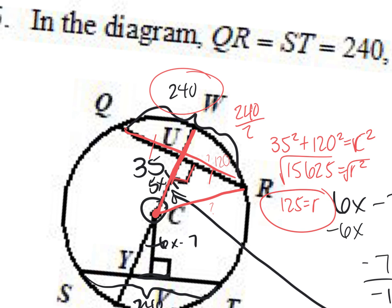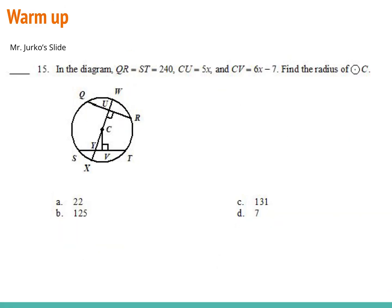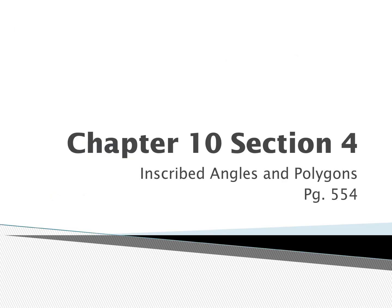Any other questions on the warm-up? Overall, guys, quiz grades — very happy with those, you worked really hard. Today we're learning about something called an inscribed angle and an inscribed polygon. Inscribed just means inside a circle — more specifically, the angle is inside the circle but the vertex is actually on the circle, which is a little different from what we've seen in the past.